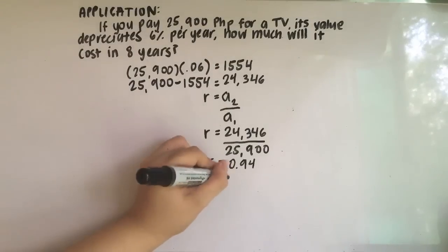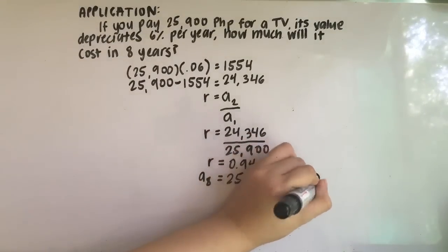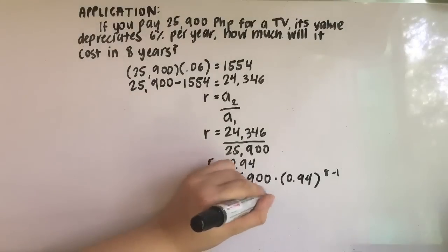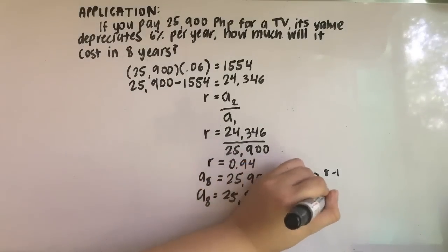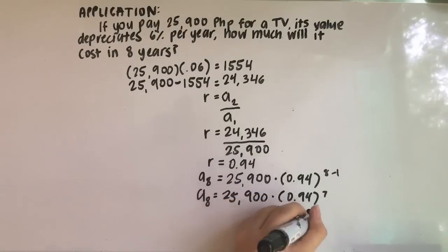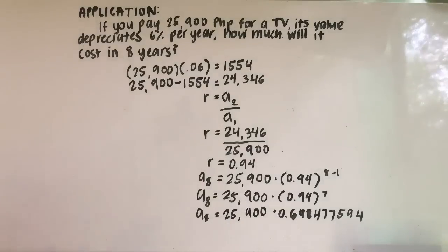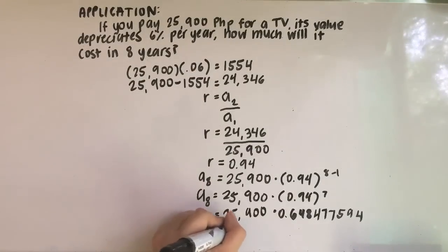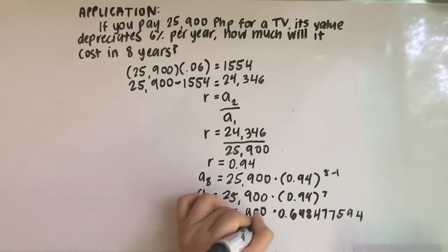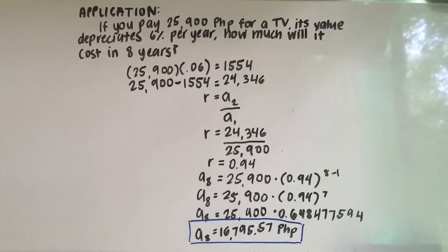a sub 8 is equal to 25,900, the first term, multiplied by 0.94, the common ratio, raised to 8 minus 1. Evaluating that, we have 25,900 times 0.94 raised to 7. 0.94 raised to 7 is 0.648477594. Multiplying this by 25,900, we get 16,795.57 pesos. That is the value of the TV after 8 years — our 8th term.